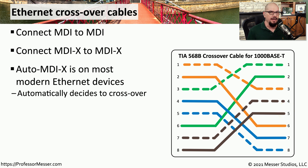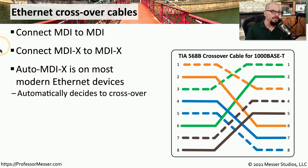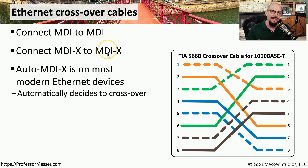One nice feature on most modern ethernet devices is that they can automatically identify when a crossover cable is needed and implement what's known as auto-MDIX. This means both devices will identify that they're both MDI or both MDIX devices and internally cross over the communication without needing a separate physical crossover cable. You can simply plug in a straight-through cable and the devices themselves will determine if a crossover is needed.